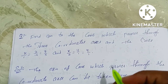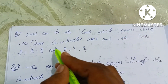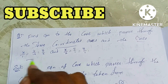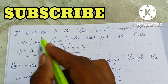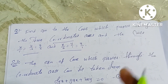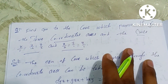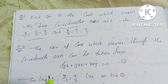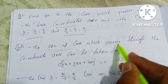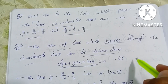In this video, we find the equation of the cone which passes through the 3 coordinate axes and 2 lines. The equation of the cone which passes through the coordinate axes can be derived from the general equation.